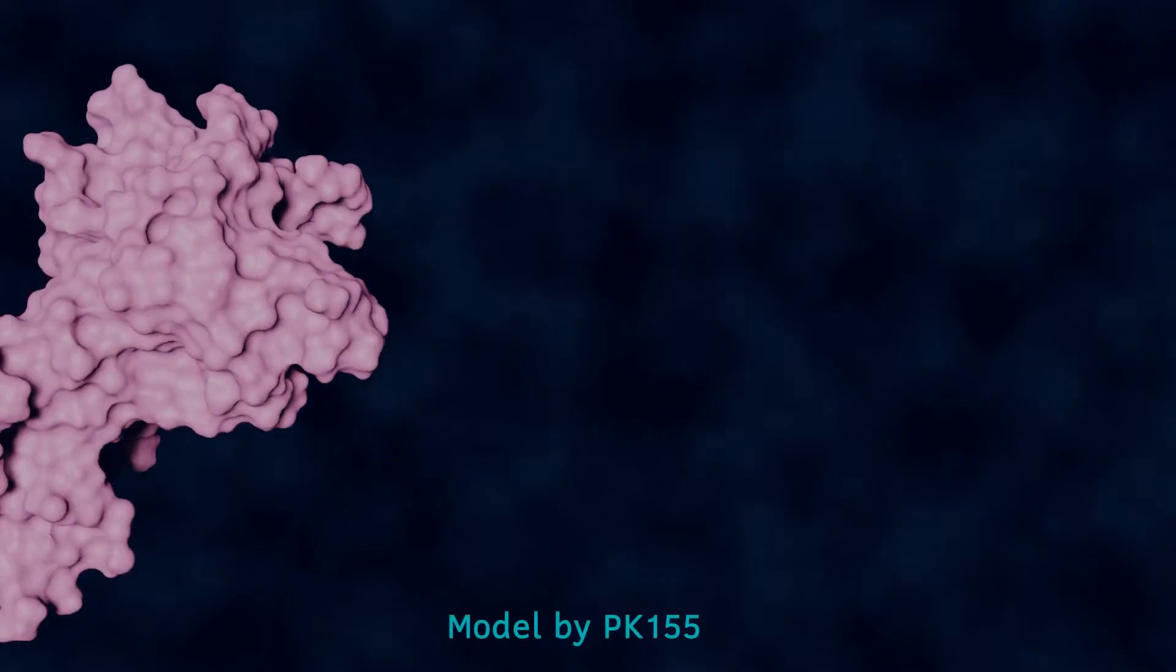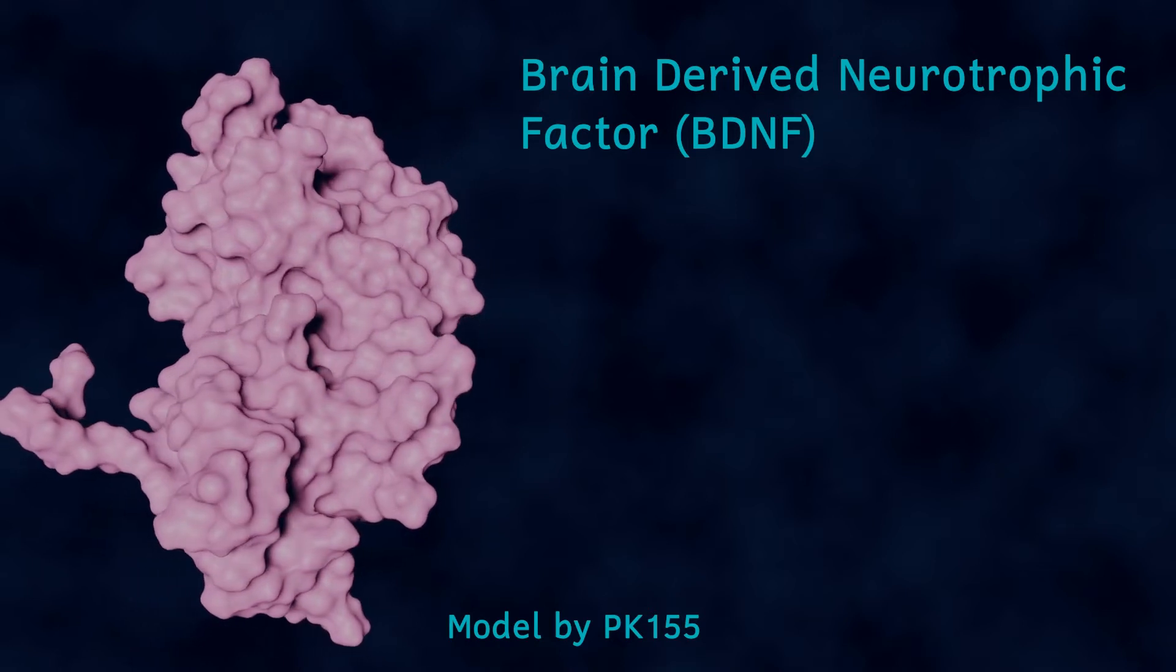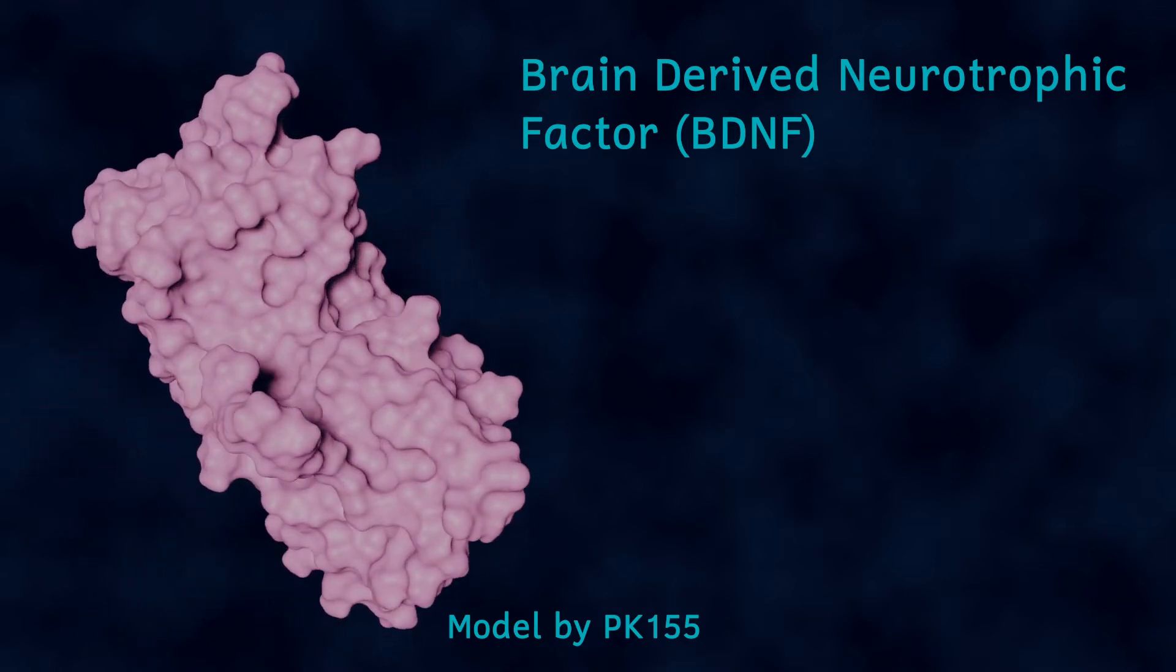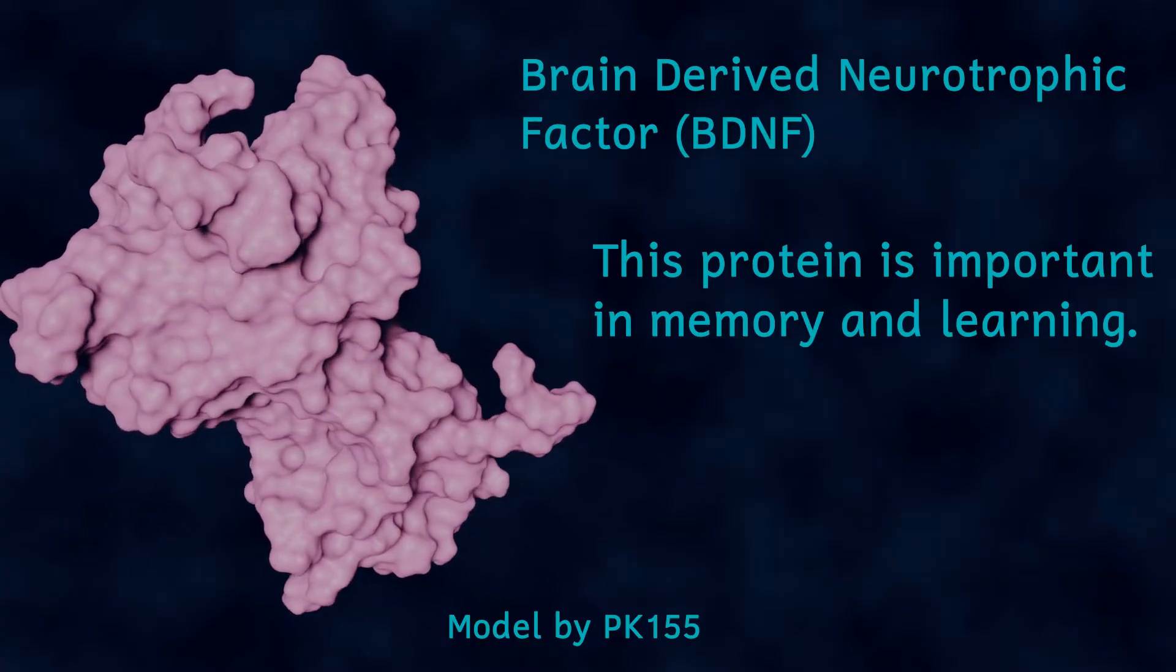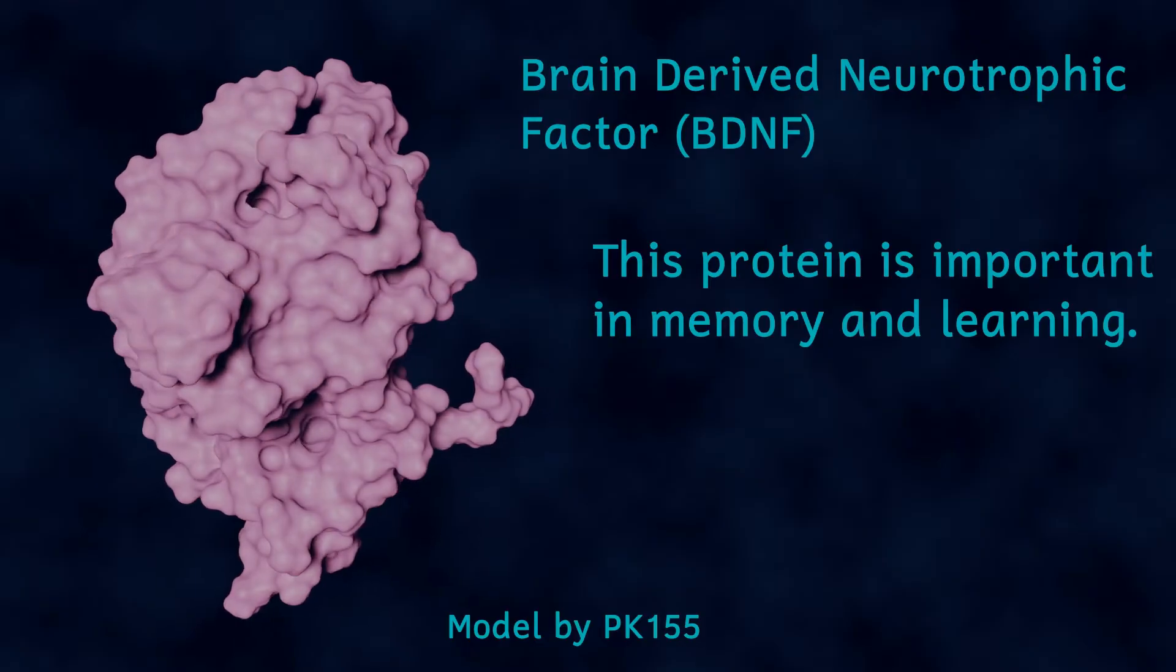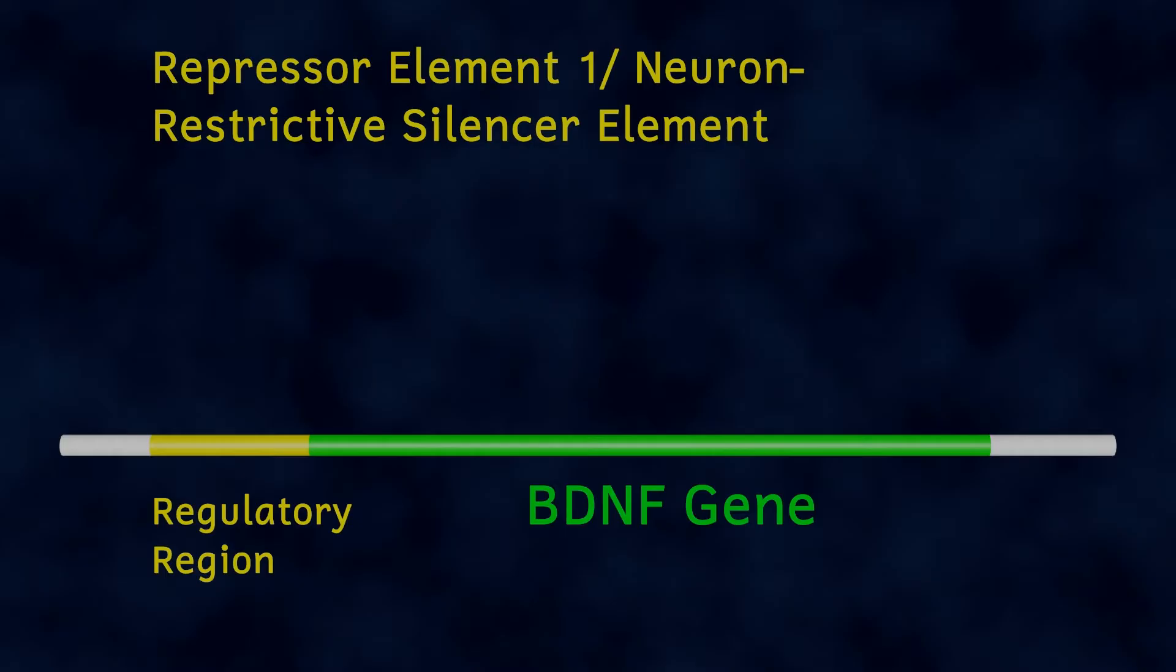One important protein in certain cells is called brain derived neuronal factor or BDNF. This protein is particularly important in brain cells and other nerve cells and these cells need this protein in order to survive and grow. Just next to the BDNF gene on the chromosome is a region of DNA called a regulatory region. This specific region is called repressor element 1 slash neuronal restrictive silencing element. Yes sometimes in biology things have got very long names.